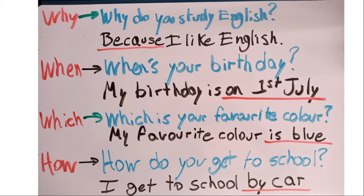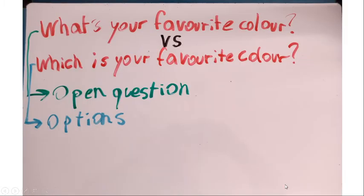Finally, we have 'how.' 'How' is used to ask about processes or methods. For example: 'How do you get to school?' — I get to school by car. 'How' gives us an explanation about the process or method used — in this case, I get to school by car.